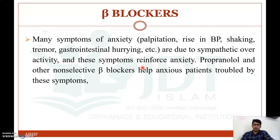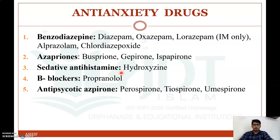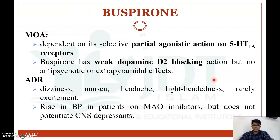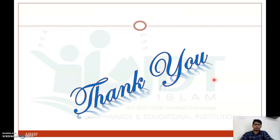Beta blockers have been discussed in detail — their mechanism of action, uses, and adverse drug reactions — in the beta-adrenergic blocking agents topic. Similarly, the mechanism, ADRs, and uses of benzodiazepines were covered under sedatives and hypnotics, and azapirones were discussed under antipsychotic agents. So here, the only important drugs are buspirone and H1 antihistamines like hydroxyzine. That is all about anti-anxiety drugs. Thank you for watching.